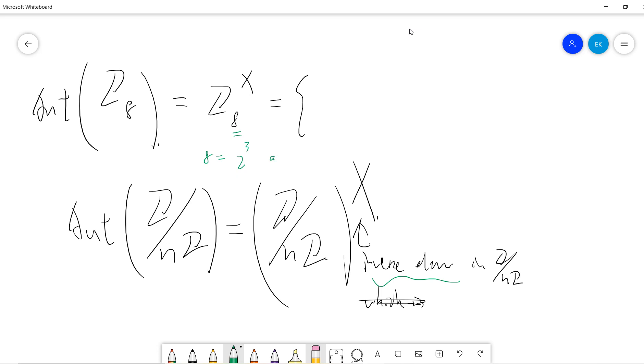So any even number cannot be, it's not allowed, right? So the only is 1, 3, 5, 7.